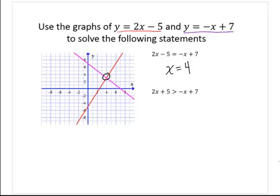If we substitute back into the equation: 2 times 4 minus 5 is 8 minus 5, which is 3. And negative 4 plus 7 is also 3. So 3 equals 3 — that's our check. That happens when x equals 4, so the solution is x equals 4. Now what I like to do at this point is to draw a boundary.